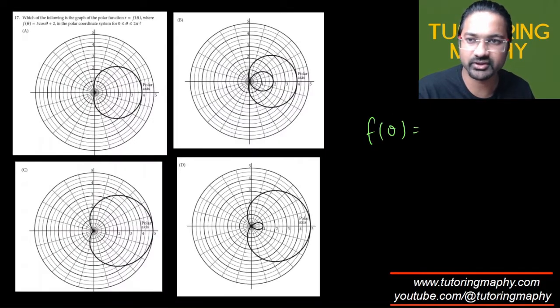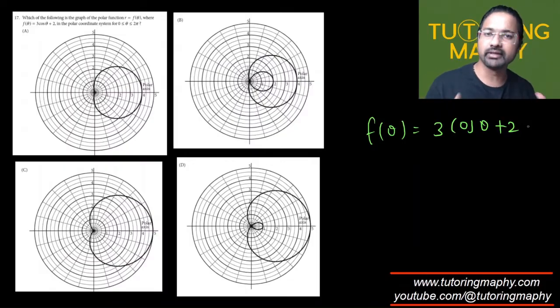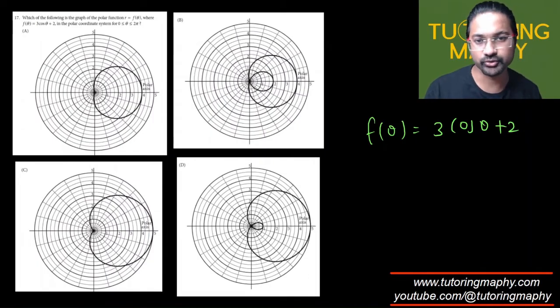Let me write the equation separately: if r = 3cos(θ) + 2. I'll tell you a really easy way which works pretty well with the options to rule them out and find the answer, especially for such polar coordinate problems.